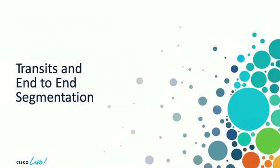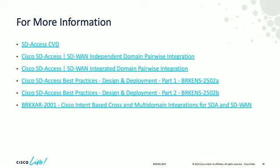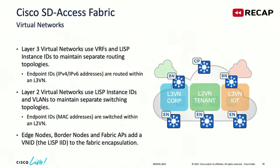We'll begin with transits and end-to-end segmentation. Each section begins with reference material — hyperlinks that, if you download the PDF, will take you to the reference. SD Access implements virtual networks at layer two and layer three, and they are isolated. Layer-three virtual networks are isolated routing tables — a packet in one layer-three virtual network can't jump to another unless you implement a policy saying it can, either through routing or extranet policy. Layer-two virtual networks are isolated switching tables.